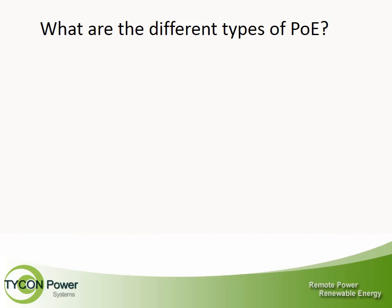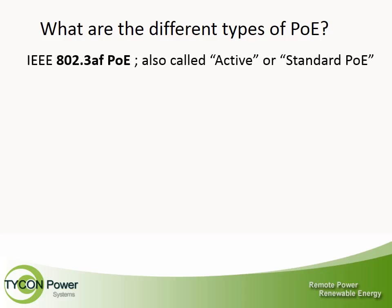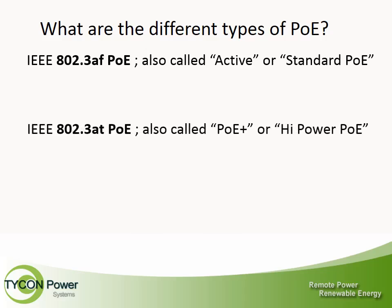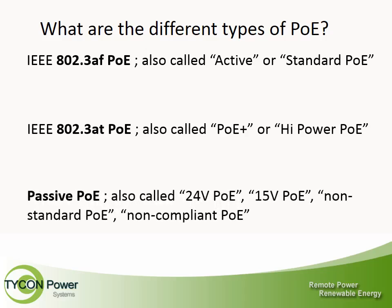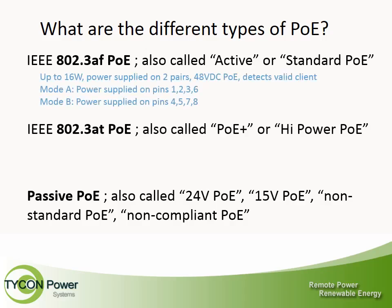What are the different types of PoE? You may sometimes see the letters IEEE, which stands for the Institute of Electrical and Electronic Engineers. The different types are: 802.3 AF PoE, also called Active or Standard PoE; 802.3 AT PoE, also called PoE Plus or High Power PoE; and Passive PoE, also called 24V PoE, 15V PoE, Non-Standard PoE, or Non-Compliant PoE.